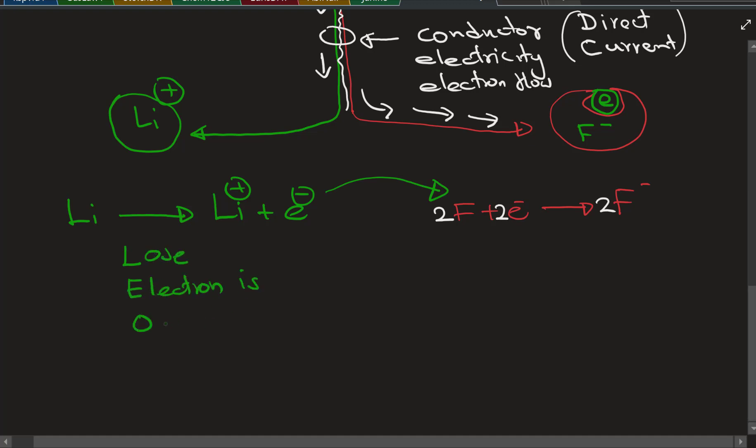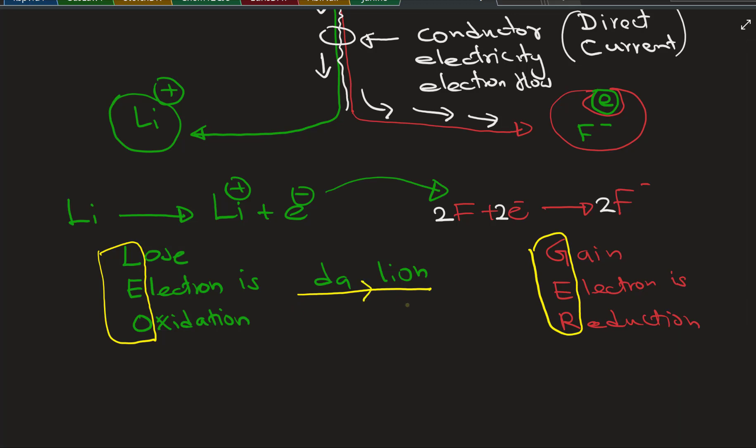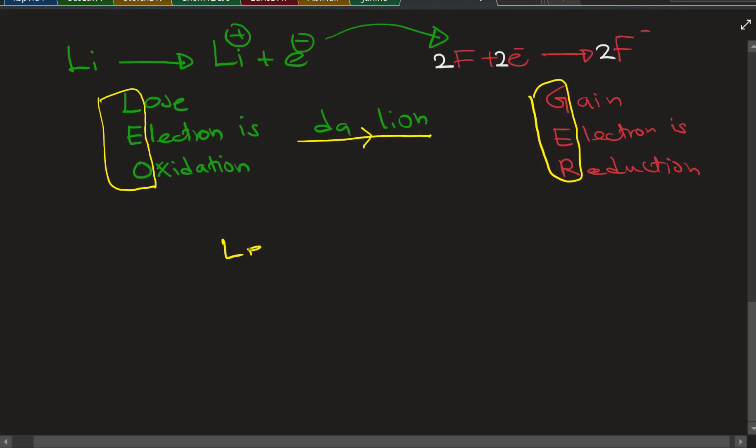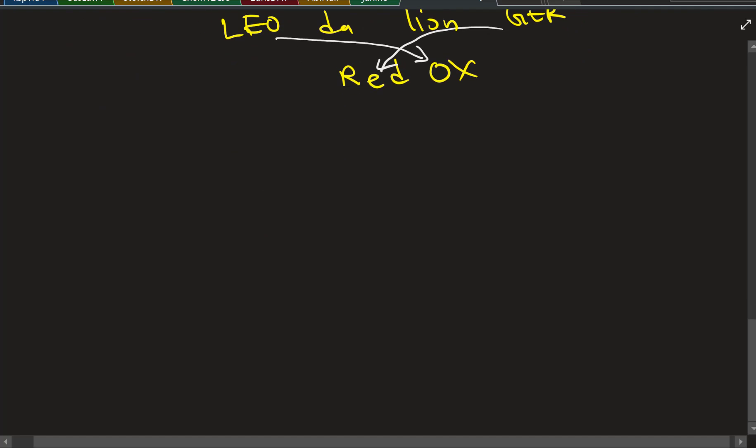This process - losing electron is oxidation - I call it LEO the lion, grrr. LEO the lion, grrr. Gaining electron is reduction, so losing electron is oxidation. LEO the lion, grrr. That's a good way to remember. The nonmetals grrr and metals LEO. This process is also called the redox reaction.